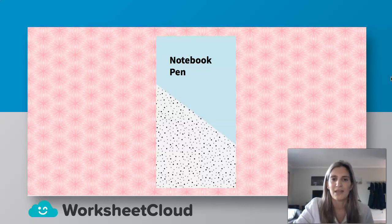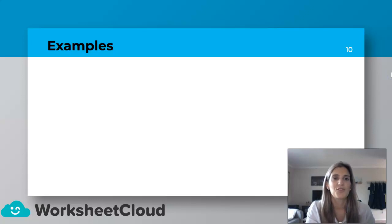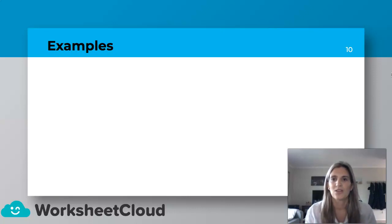Grab that notebook and a pen, or a piece of paper — you're going to do an activity. You can also verbally do this with me. I'm going to show a picture, and we're going to try to think of an interjection that we can use. Let's look at the first one.